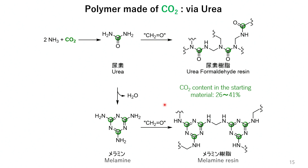Let's move on to the specifics. This is a method that is already in use. Ammonia and carbon dioxide are used to produce urea, which is also used as a fertilizer. Urea formaldehyde resin is produced from urea and formaldehyde. Alternatively, melamine can be produced from urea and then used to create melamine resin. Melamine resin is used in products like baby plates and dishes. I brought this melamine sponge with me — students might not use it often, but this is really effective at removing stains.